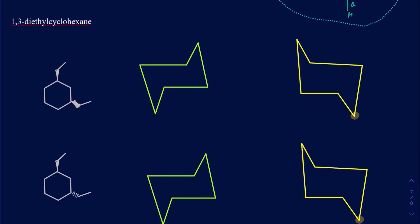Let's try 1,3-diethylcyclohexane. I'll number the carbons 1, 2, 3, 4, 5, and 6. On the first position I've got the ethyl pointed up, and then on the third position the ethyl is again pointed up — so I make that going up as well. Both of those turn out to be axial.